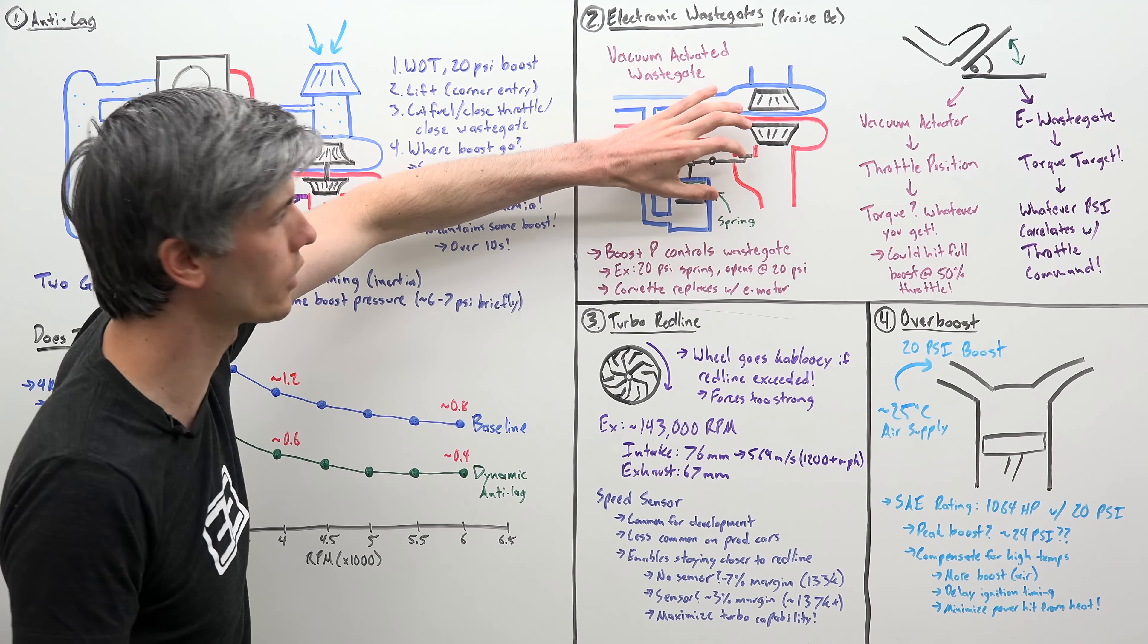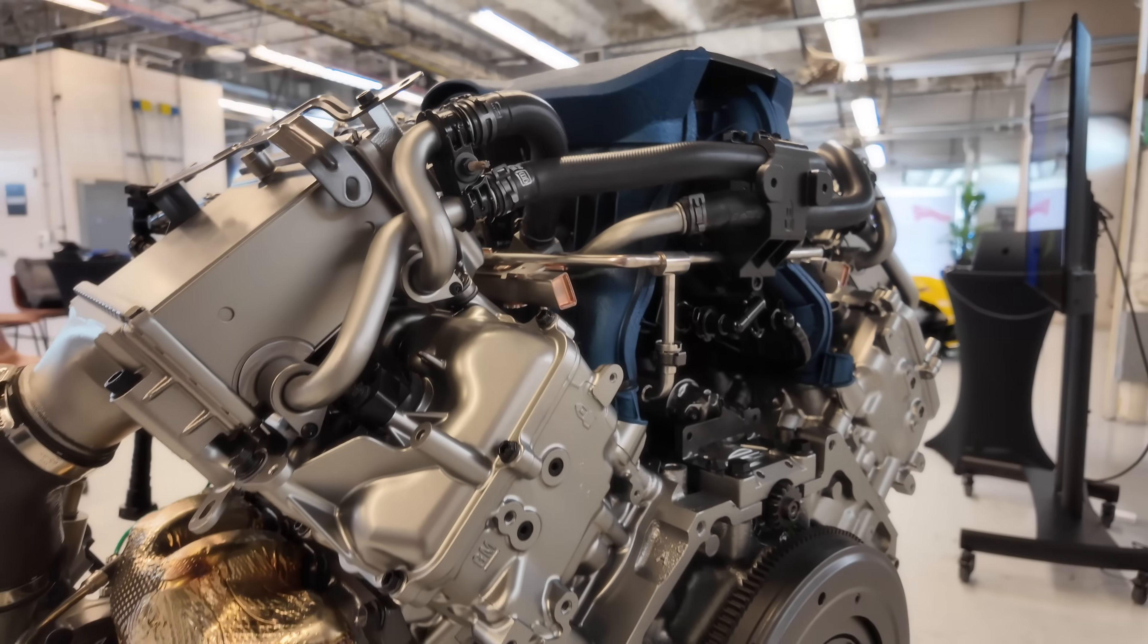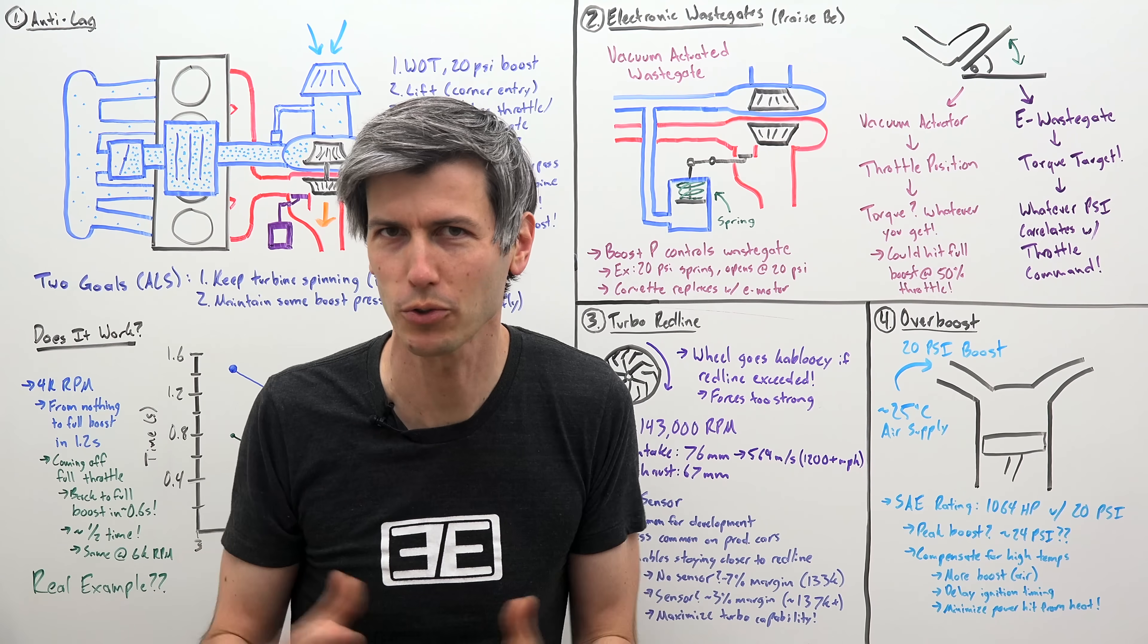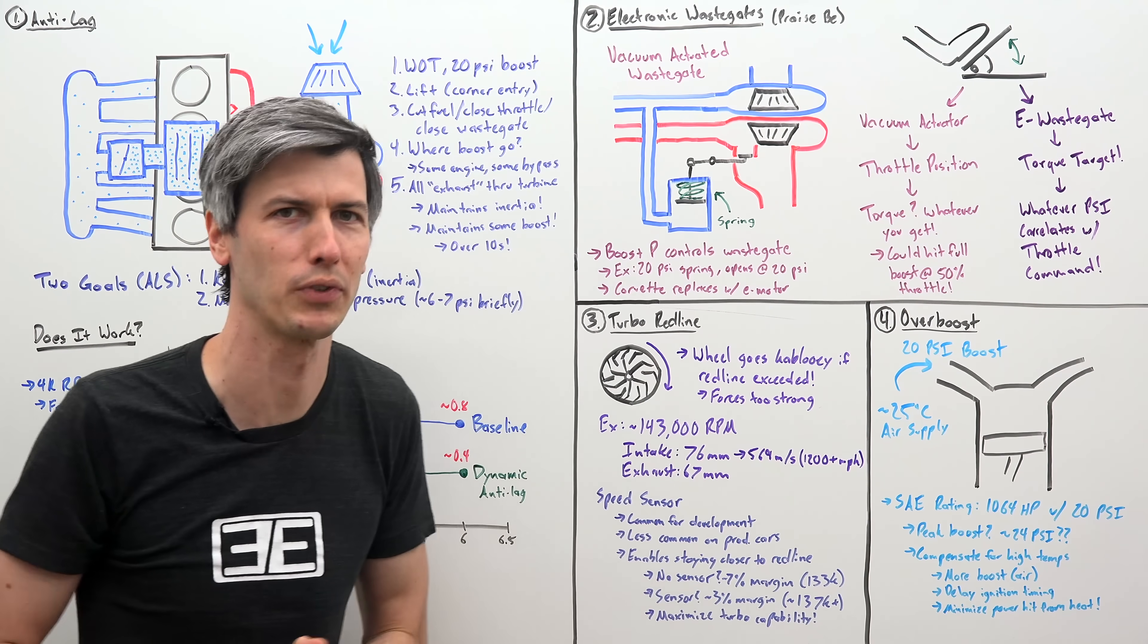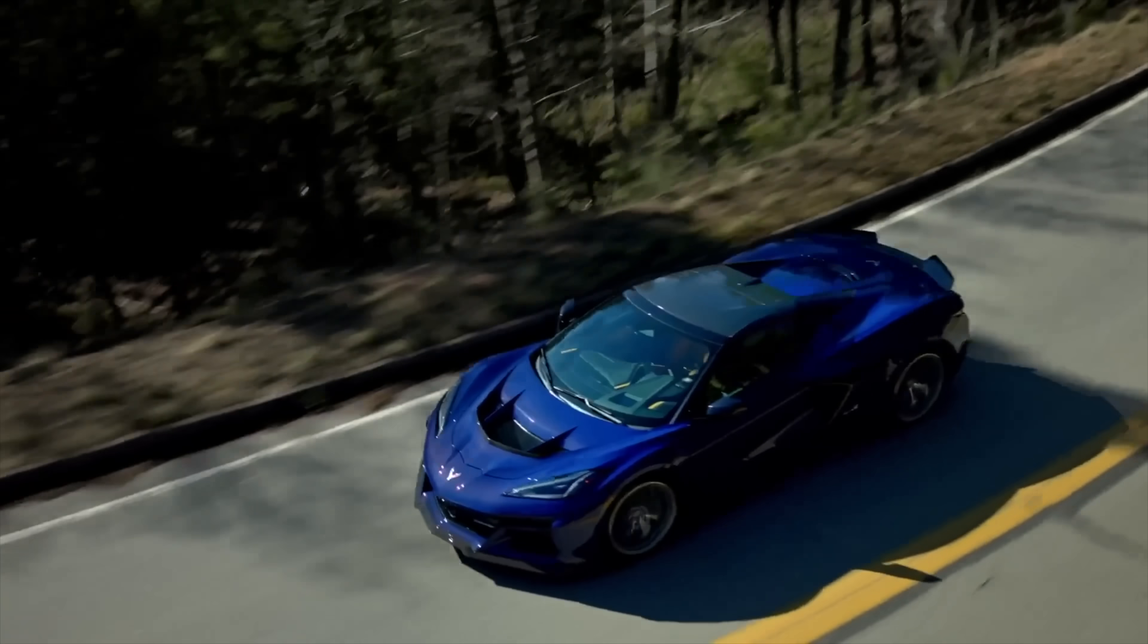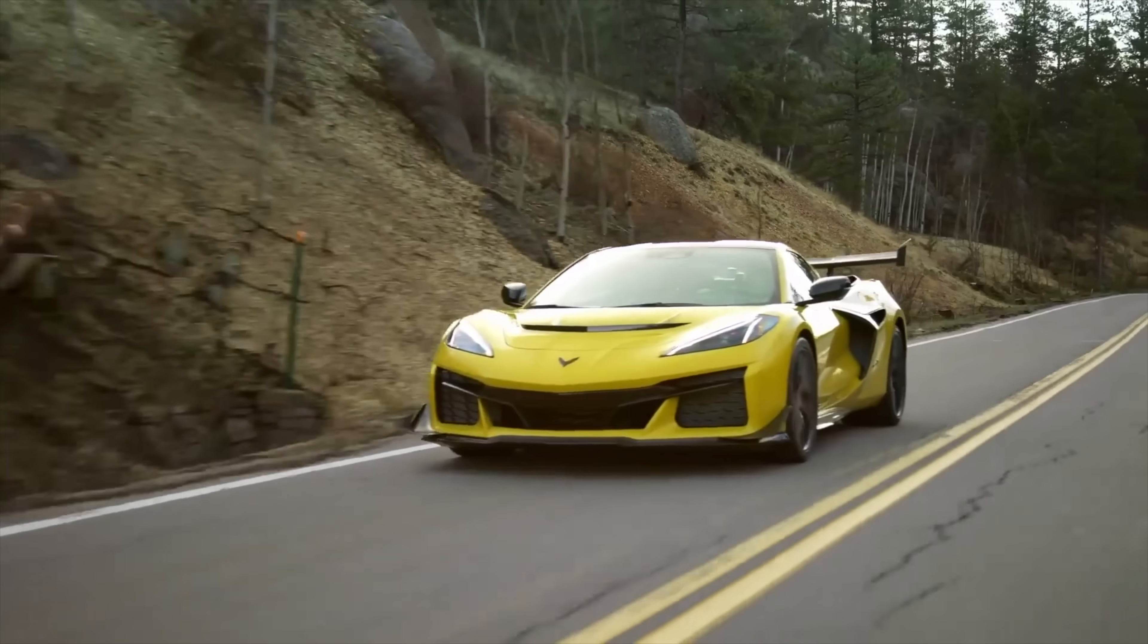Instead, you just have an electric motor positioning that wastegate wherever you want. And they're far simpler, just an electric motor. No vacuum lines and complex routing for four port boost controllers and all the added potential for leaks. And electronic wastegates result in better efficiency, because you can keep the wastegates open at low throttle, so you have a less restrictive exhaust.